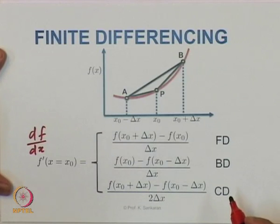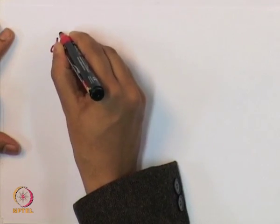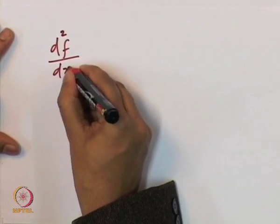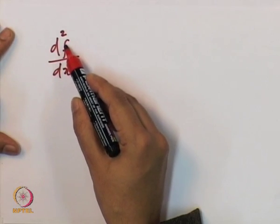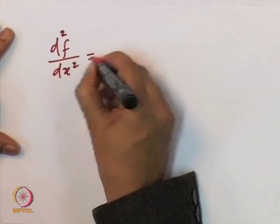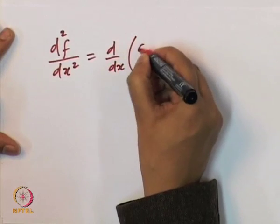Now let us say we are interested not only in df/dx, but also in the value of the second differential. What I mean is, let us say I am interested in the second differential with respect to x — that is, differentiating df/dx once more, which can be written as d/dx of df/dx.